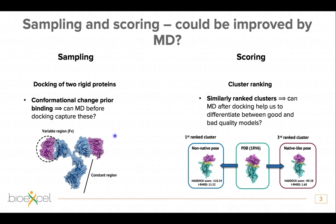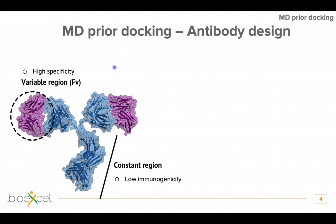The second part will address the scoring part — more specifically the case where we have similarly ranked clusters or different clusters but you don't know which one to pick, and whether MD can help us with this.